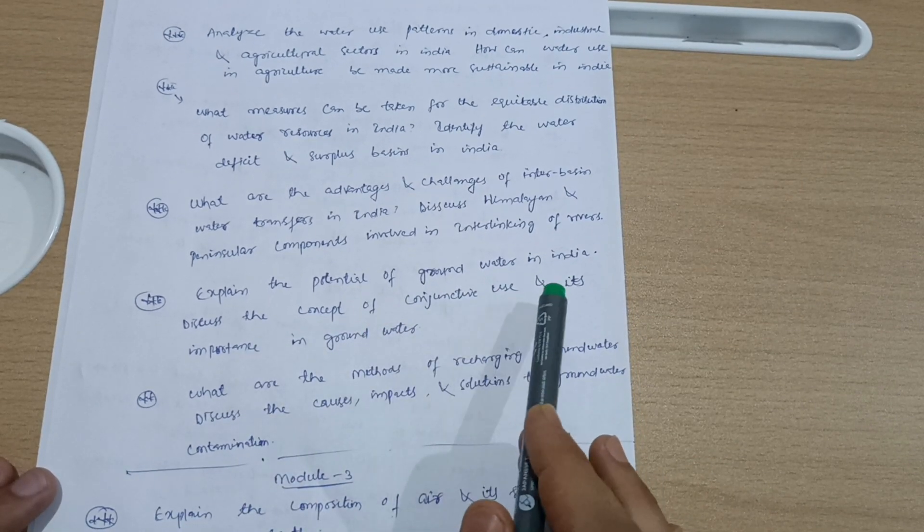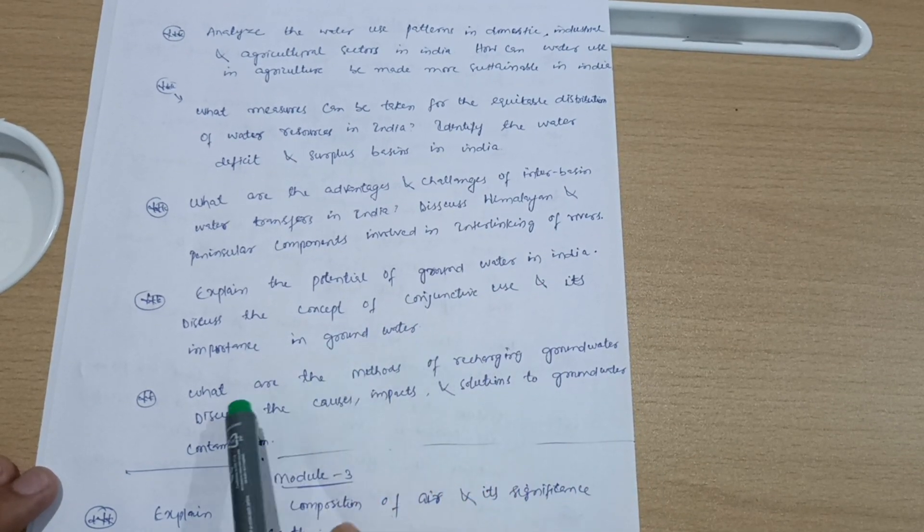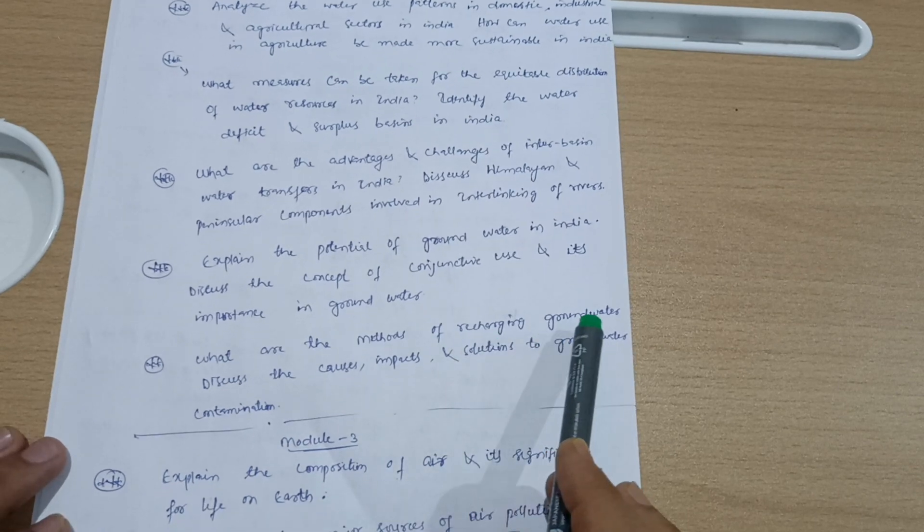Explain the potential of groundwater in India. Discuss the concept of conjunctive use and its importance in groundwater. What are the methods of recharging groundwater? Discuss the causes, impacts, and solutions to groundwater contamination. This is all about Module 2.